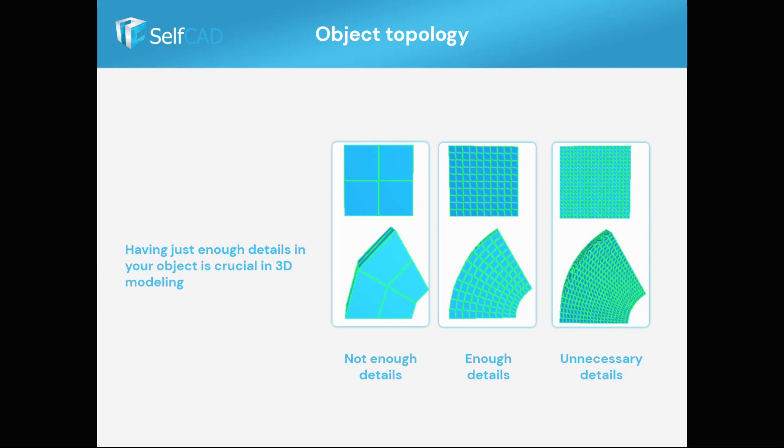Hard surface modeling is another common way of modeling, especially among artists. And as you can guess, SelfCAD excels in this as well. In surface modeling, you care a lot about the topology structure and that greatly affects the outcome.